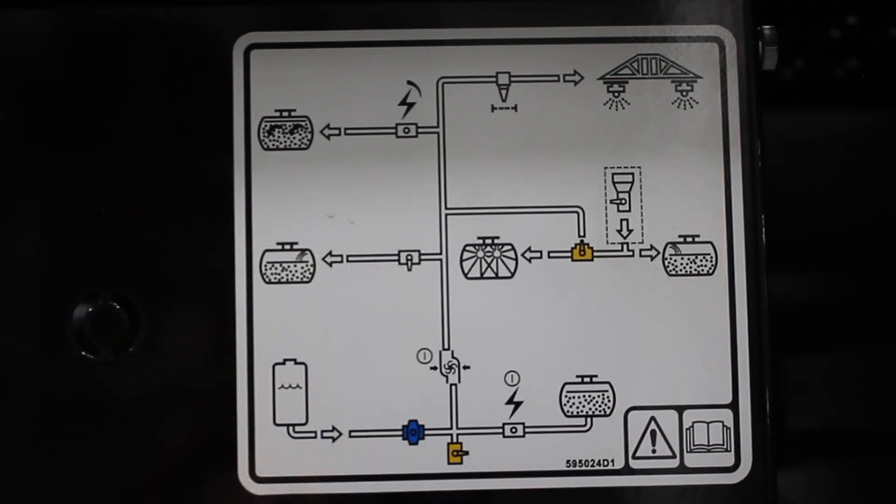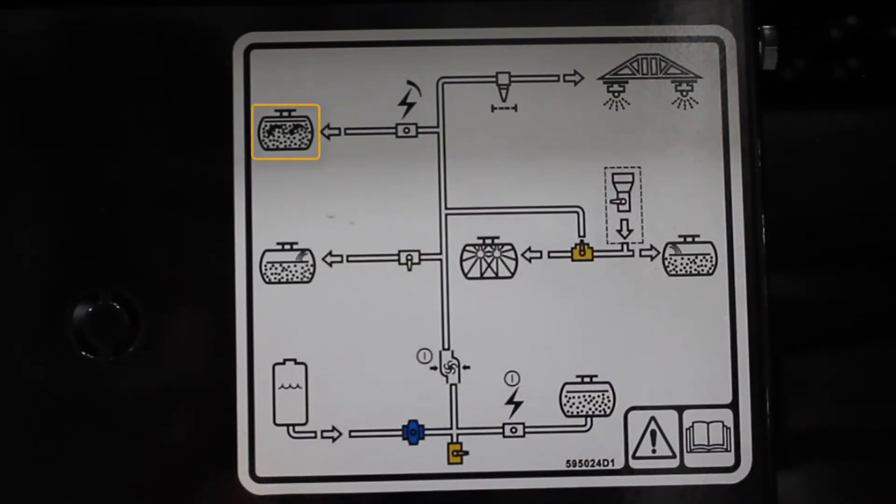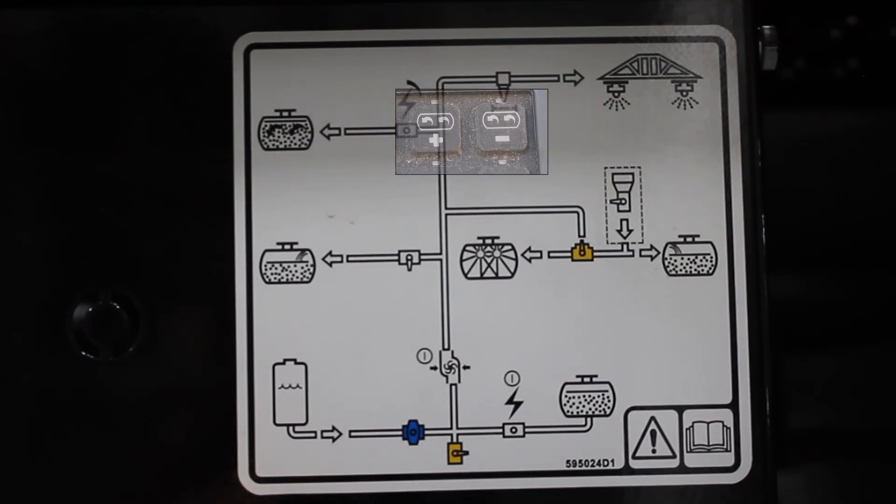Moving up we have our agitation. These are electric valves. You see the symbols in the tank will match the symbols on the keypad letting you know that's agitation.